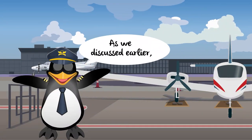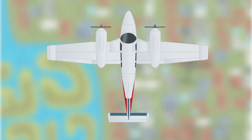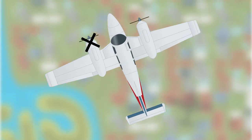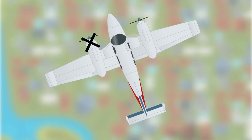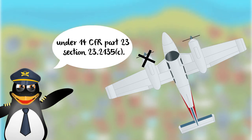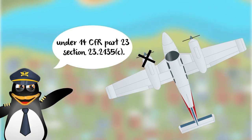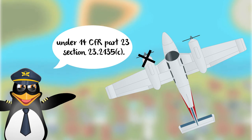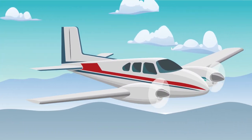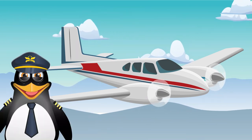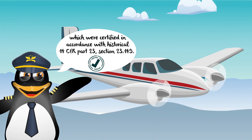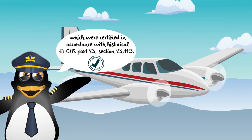As we discussed earlier, you should have learned that VMC, minimum controllable airspeed, is defined as the calibrated airspeed at which, following the sudden critical loss of thrust, it is possible to maintain control of the airplane under 14 CFR Part 23, Section 23.2135C. There are several factors that affect VMC speed for those multi-engine airplanes often used during flight training, which were certified in accordance with historical 14 CFR Part 23, Section 23.149.